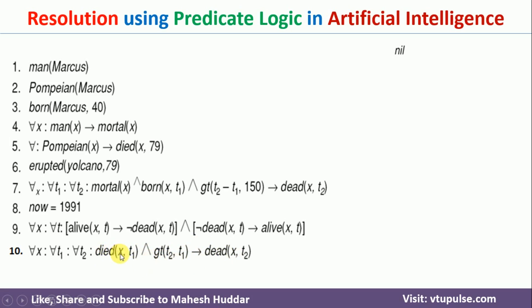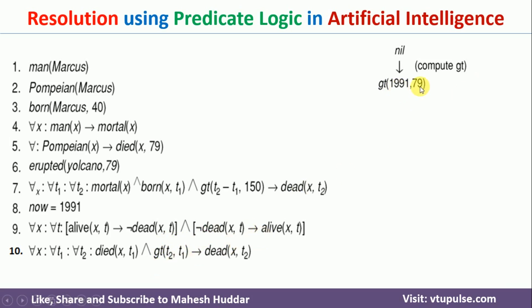We can use this particular statement: if you prove that x died at time t1, and t2 is greater than t1, you can say that this particular person died at t2. So t2 should be 'now,' because we want to prove that the person is not alive now. That's the reason we will use the statement gt(t2, t1).